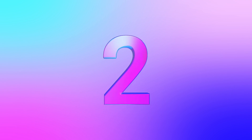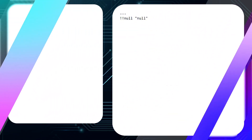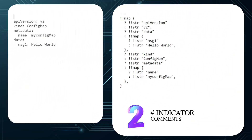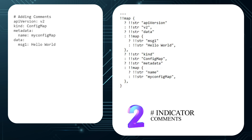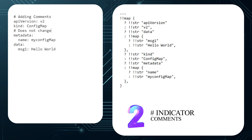Number 2: YAML supports comments. Comments can start anywhere on the line with a pound sign and continue till the end of the line. This can be very handy in large documents such as CI/CD pipelines. Adding comments does not change the output in any way.